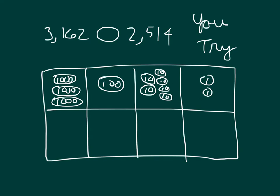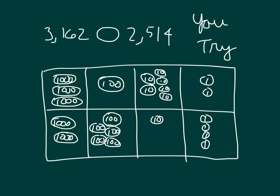Did you model that first number correctly? Now we're modeling the second number. There are two thousands in that number, five hundreds, one ten, and four ones — and there is that number fully modeled. Three thousands is bigger than two thousands, so already we know that three thousand one hundred sixty-two will be larger than two thousand five hundred fourteen. So three thousand one hundred sixty-two is greater than two thousand five hundred fourteen. You're using a place value board with discs and units to model those numbers.